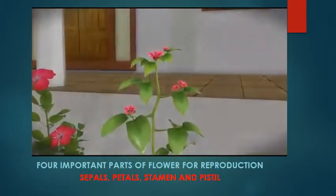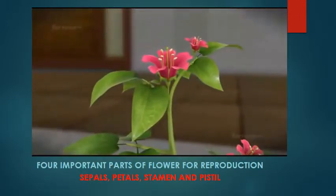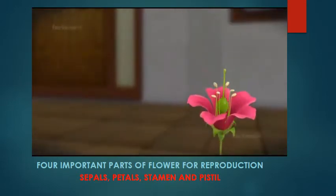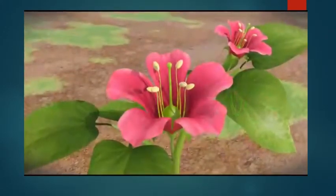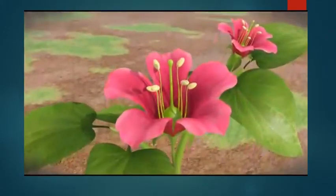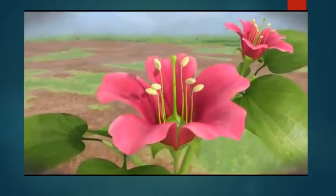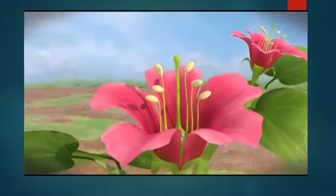To understand the process, let's first look at the reproductive parts of a flower. A flower is made up of four or more concentric whorls. Now that we know the basic parts involved, let's look at the types of pollination.